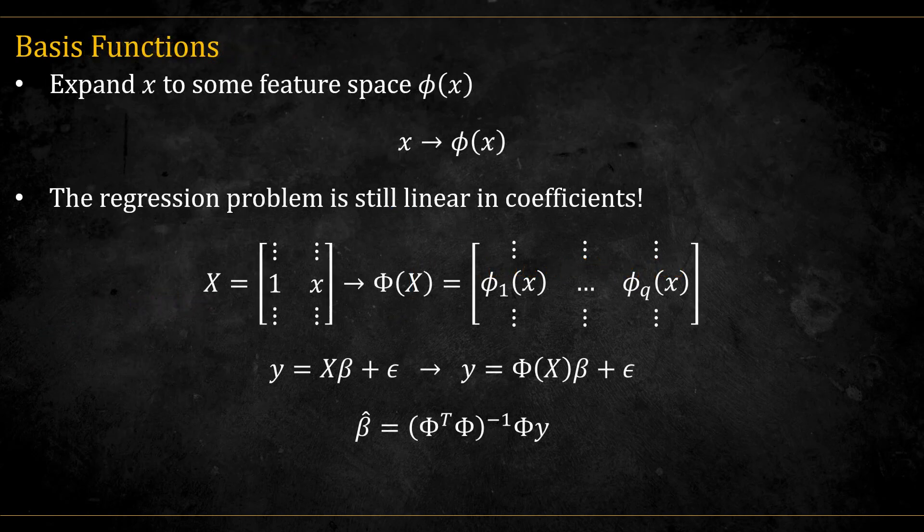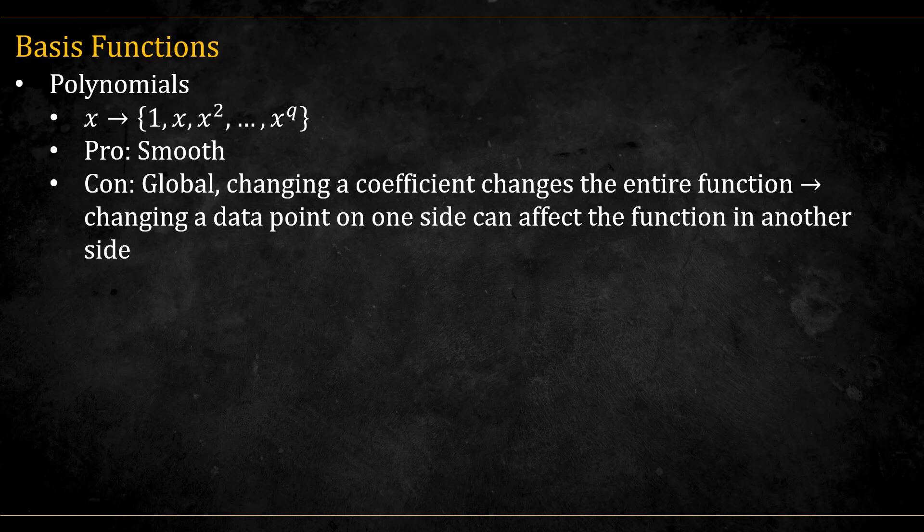Basis functions mean we expand x to some feature space phi. Notice that even if we do this, the regression problem is still linear in coefficients. So we move from the regular x-design matrix to this expanded phi matrix with all the different features we use. We therefore move from this linear x times beta to this nonlinear phi times beta. We can continue regularly, do OLS, and get the solution in terms of phi.